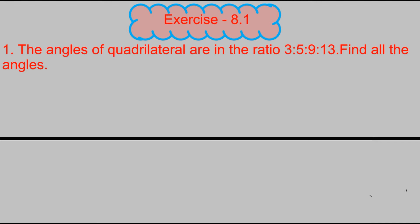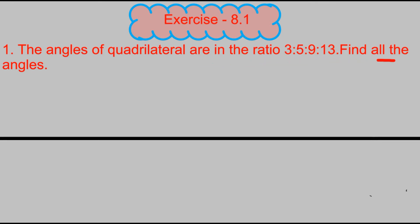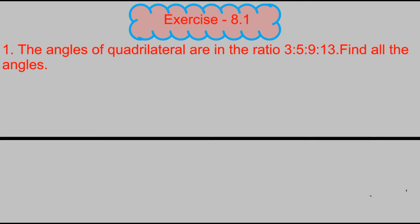The first question is: the angles of a quadrilateral are in a given ratio — find all the angles. This type of question we have already done. You know what the angle sum property of a quadrilateral is — because it talks about 4 angles, their sum is 360 degrees. So here we have to use the angle sum property.